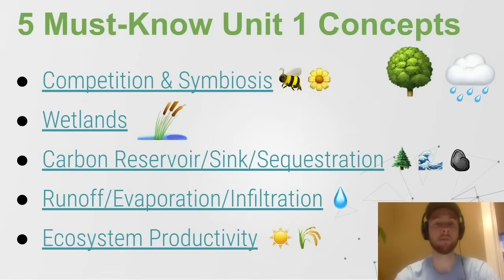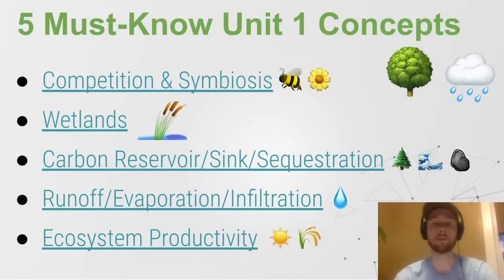Then we have wetlands. Wetlands are super productive biomes — they have a ton of plant growth, support a ton of animal life, and they can take on a lot of excess water during storms. So they provide a ton of ecosystem services to humans and are very important biomes globally.